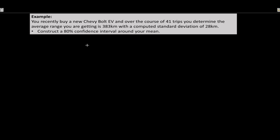This looks very similar: you recently buy a new Chevy Bolt and over 41 trips determine an average range of 383, but now with a computed standard deviation of 28. That's the big difference — this is our sample standard deviation, computed from our sample of 41 trips. So s-x equals 28 kilometers. Since we don't know the population standard deviation and are using the sample standard deviation, we use a t-distribution.